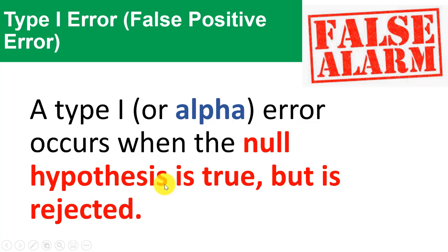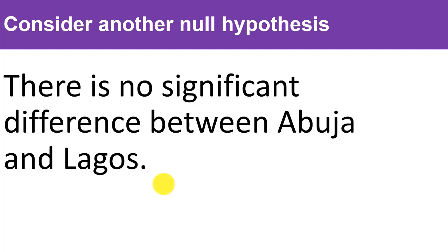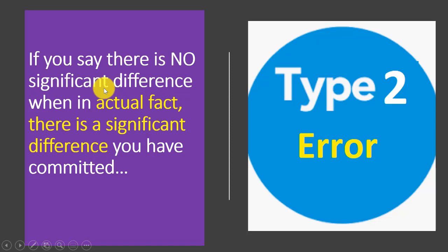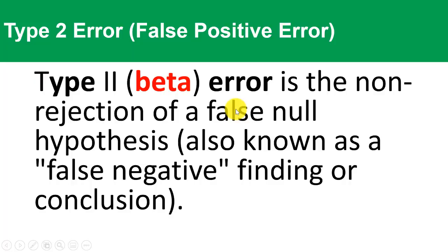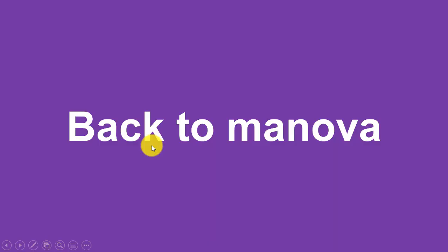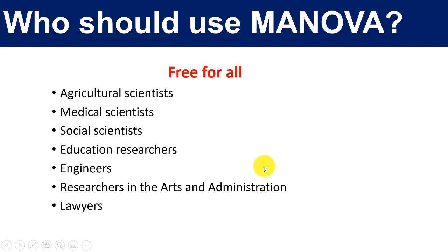For Type II error: suppose the null hypothesis says there's no significant difference between Abuja and Lagos. In reality there IS a significant difference — Lagos has heavy traffic and everything. So if you say there is NO significant difference when in actual fact there is, you have committed a Type II error. The Type II error is also known as the beta error — the non-rejection of a false null hypothesis, also called a false negative finding.